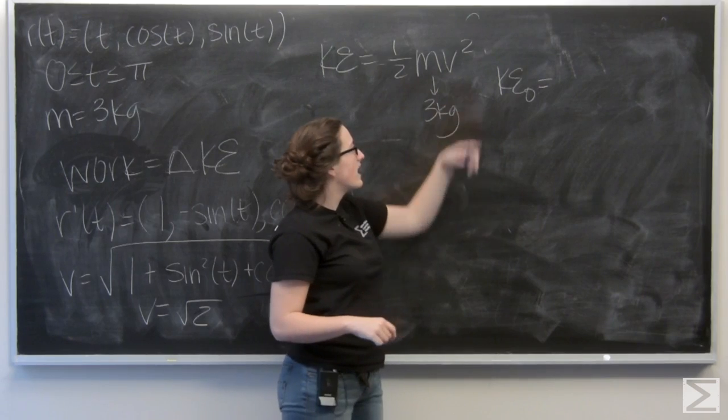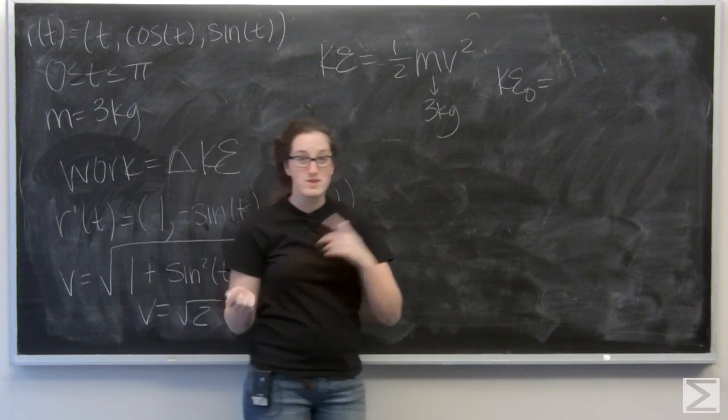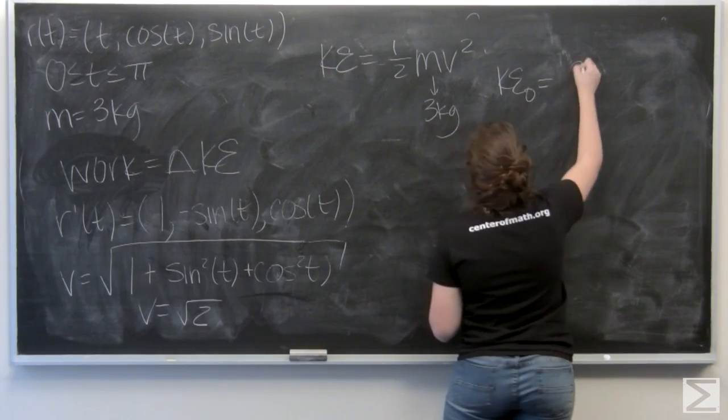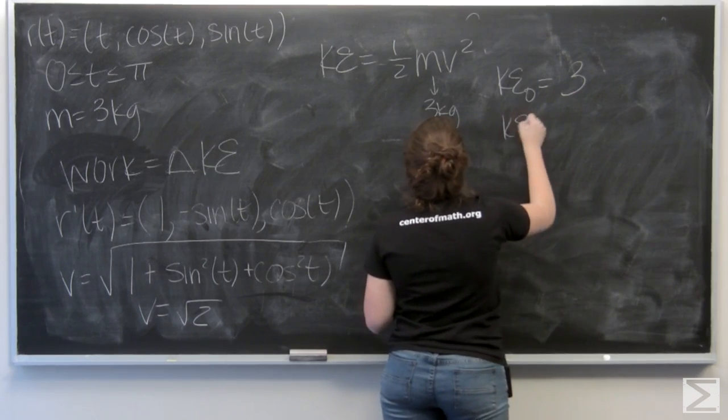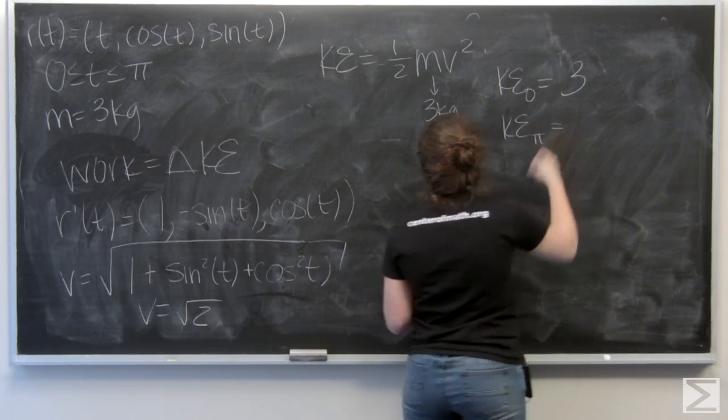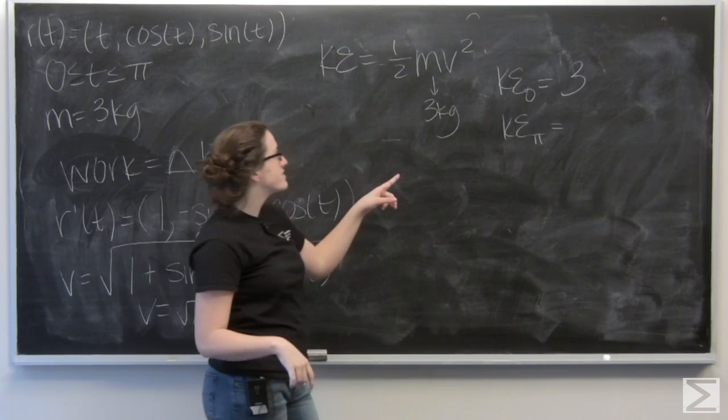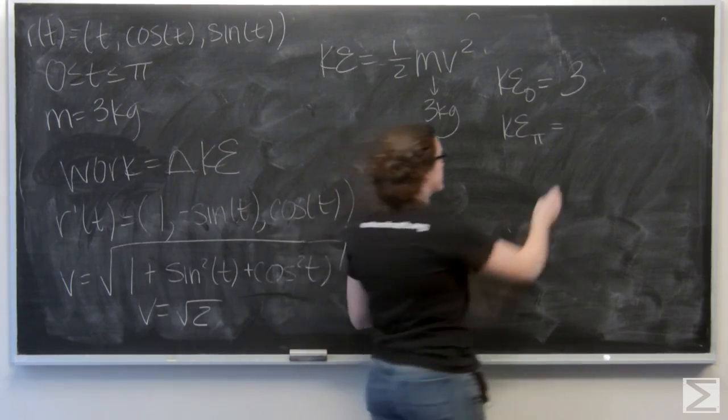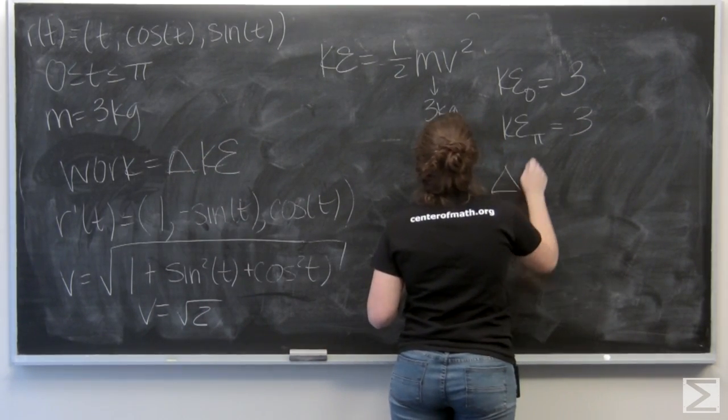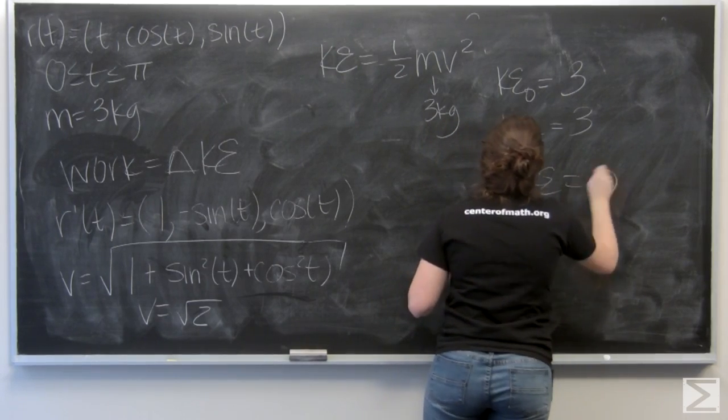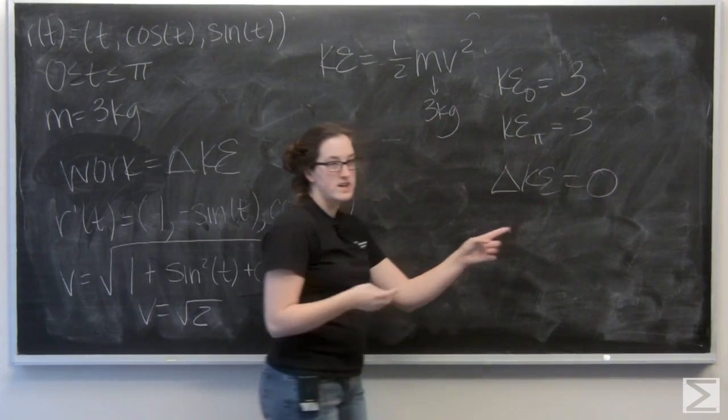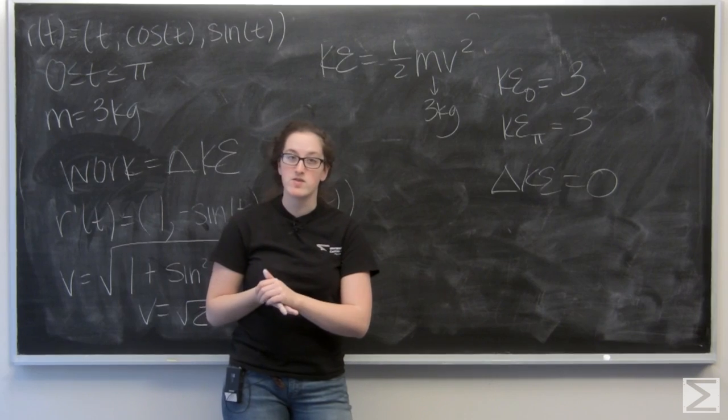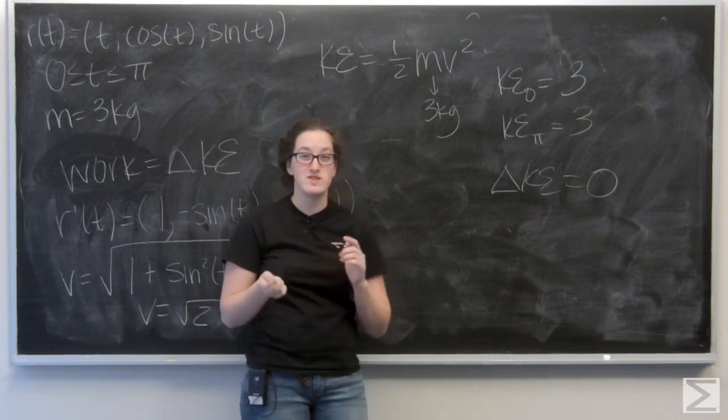I have 3 times 1 half times velocity squared, which is 2. So, I have 3. And then the same thing at pi. Velocity is still the square root of 2. So, my kinetic energy is still 3. So, I could say there's no change in kinetic energy. So, the work done by F along C is actually going to be zero.